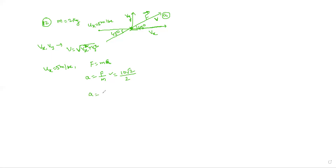Acceleration A equals 5 root 2 meters per second squared. This is the total acceleration. We now resolve this into horizontal and vertical components — the horizontal direction and the vertical direction.